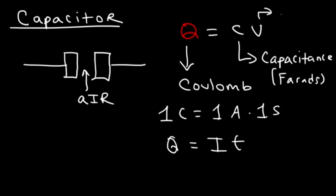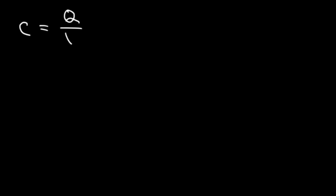V is the voltage measured in volts. So what exactly is capacitance? How can we describe it? I like to think of capacitance in terms of charge efficiency. One farad is equal to 1 coulomb per volt.